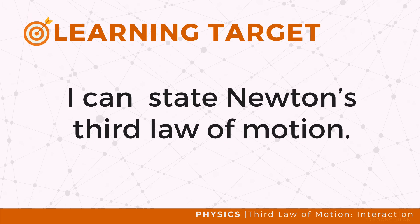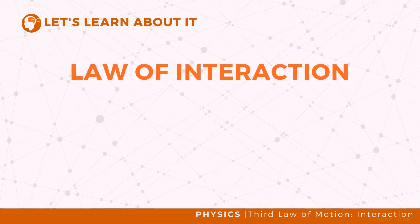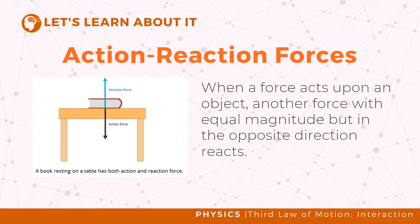Newton's Third Law of Motion explains how objects interact with each other in terms of forces. It states that when an object exerts a force on a second object, the second object exerts an equal amount of force in the opposite direction on the first object. This law is often paraphrased as: for every action there is always an equal and opposite reaction. Hence, this law is also known as the Law of Interaction, and it tells us that forces always come in pairs.